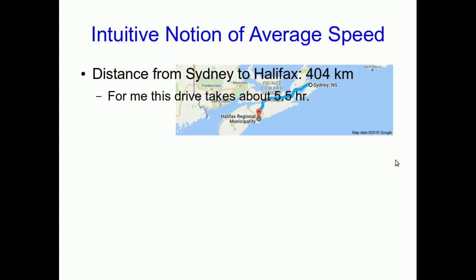We're finally ready to tackle speed and velocity. So let's think about driving from Sydney to Halifax, which many of you will have done. Google Maps tells me that's 404 kilometers, and for me that drive would take about five and a half hours. So we can say that my average speed would be 404 kilometers divided by 5.5 hours, and that's 73.5 kilometers per hour.